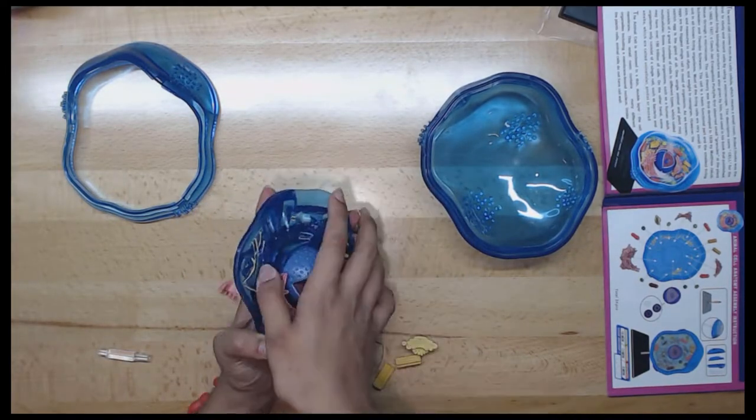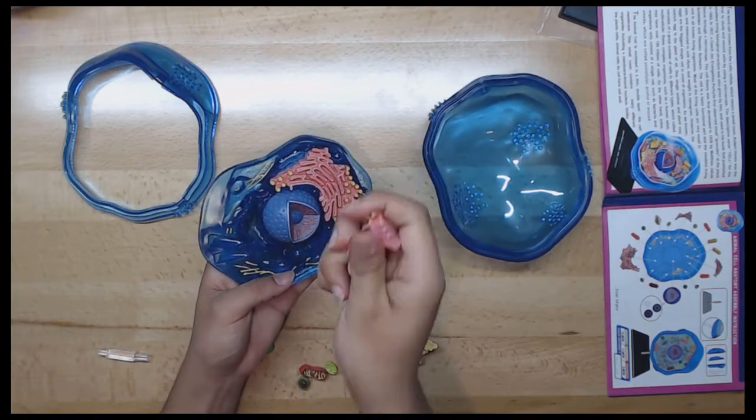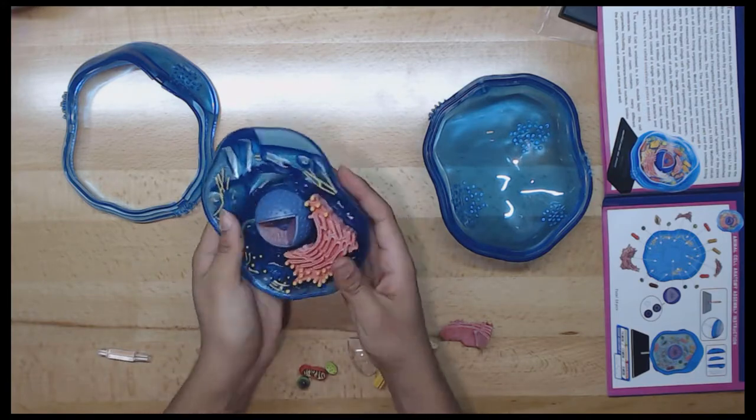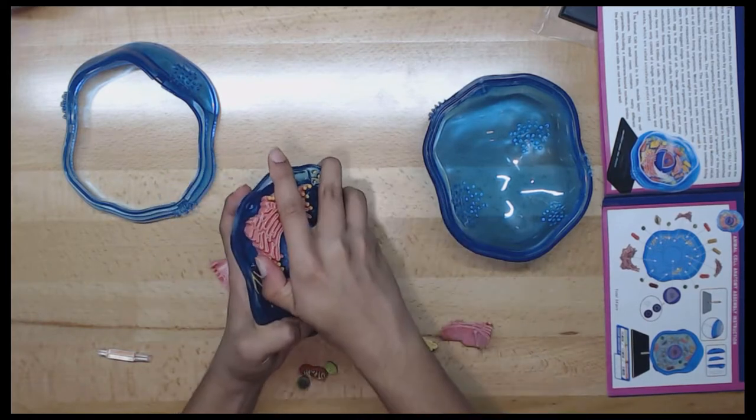Next, we have the secretory vesicles. They are membrane-bound vesicles derived from the Golgi complex and contain material, such as hormones and neurotransmitters, that is to be released from the cell and then transported to the cell surface for release.